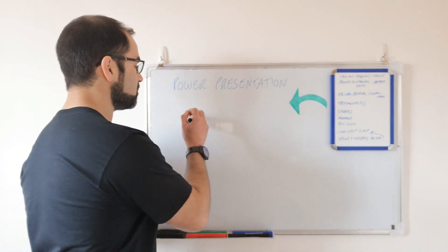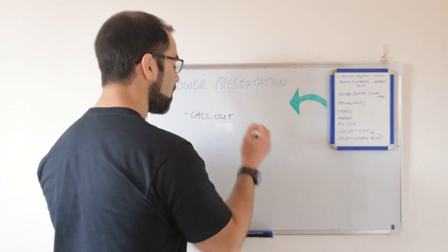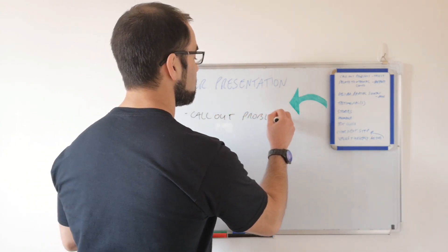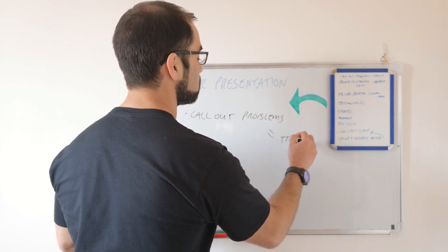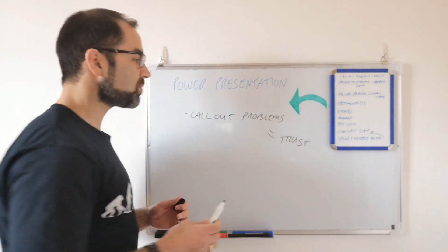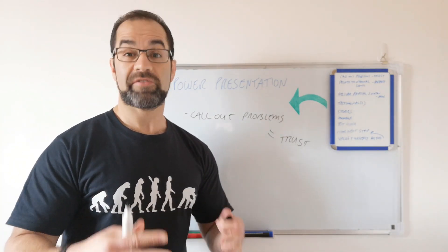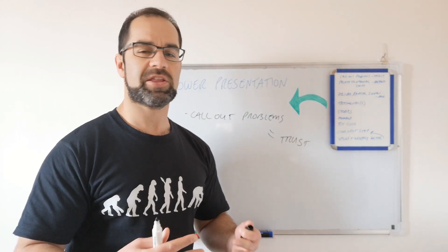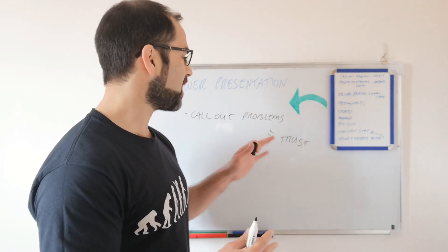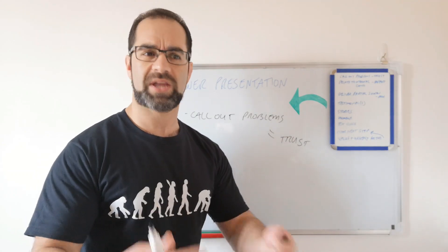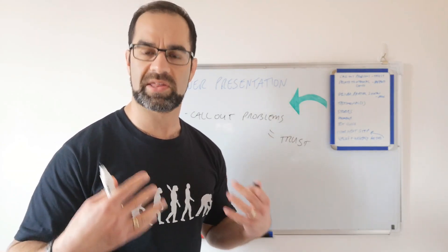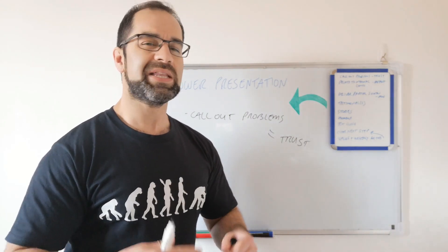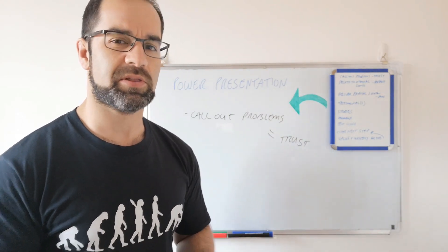First thing you want to do is call out your target market's problems. Call out their problems. And the reason we do this is because this equals trust. For someone to believe you, especially right now if you don't have huge results, then there needs to be some kind of specificity. There needs to be some way that they say, you know what, this person actually understands my specific situation. Because if you can show you understand somebody's problems, that leans them in to say, well, maybe you understand the solution.